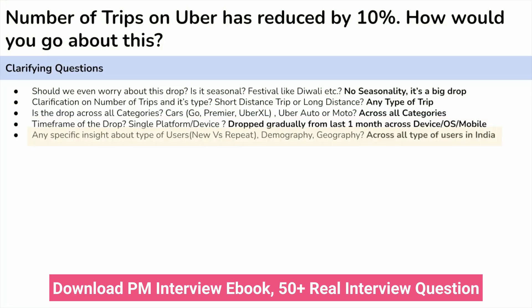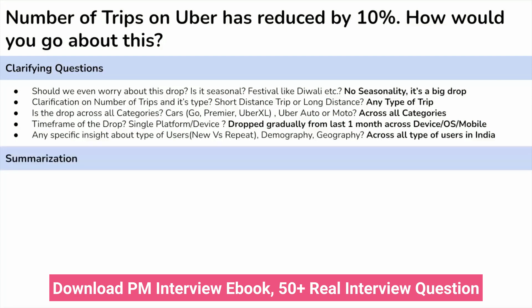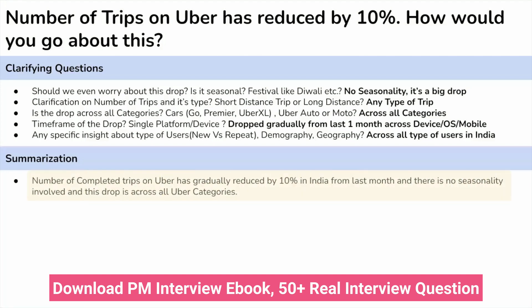The final question we can ask is about the type of user, geography and demography. The drop is across all types of users in India. To summarize: number of trips on Uber has gradually reduced by 10% in India from the last one month, there is no seasonality involved, and this drop is across all types of Uber categories. This is the problem statement for which we have to find the root cause and give the solution.